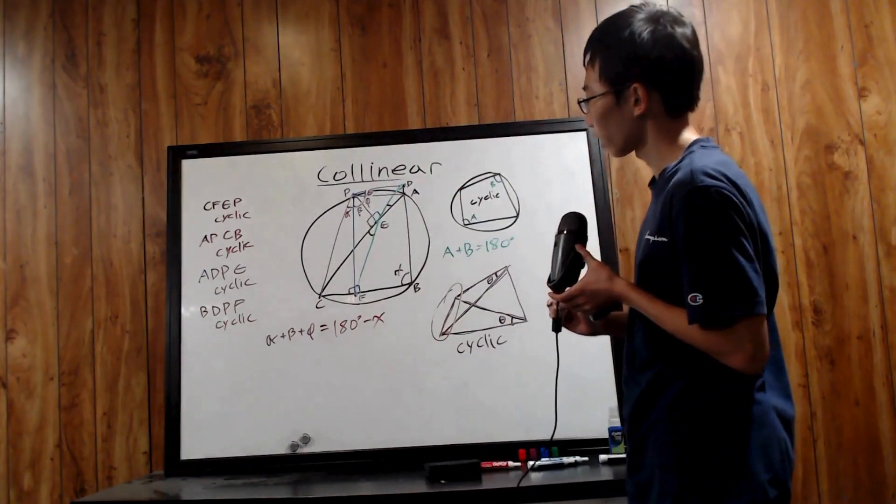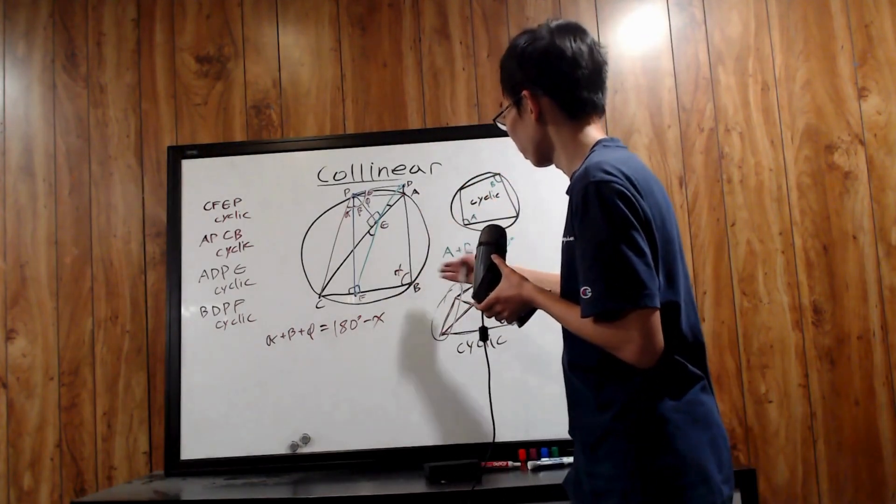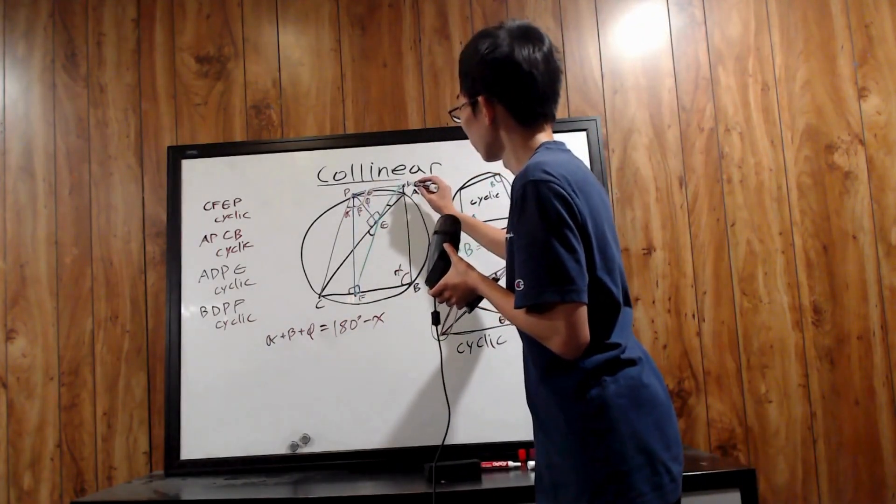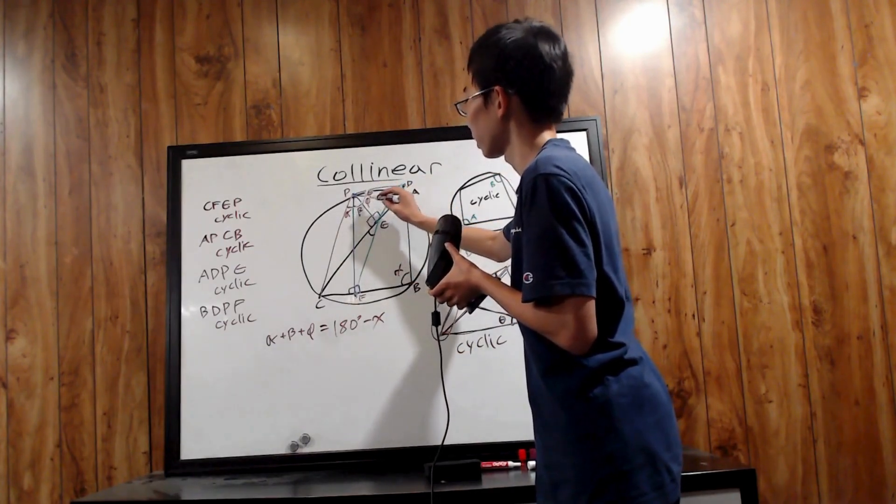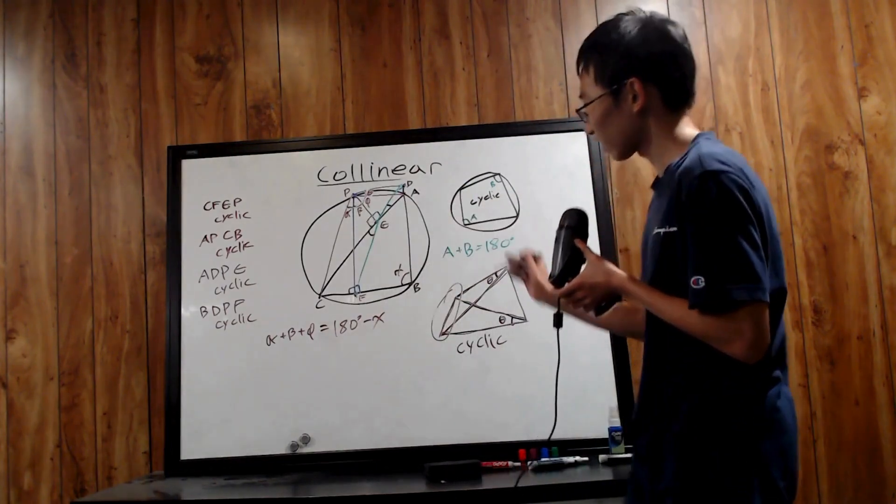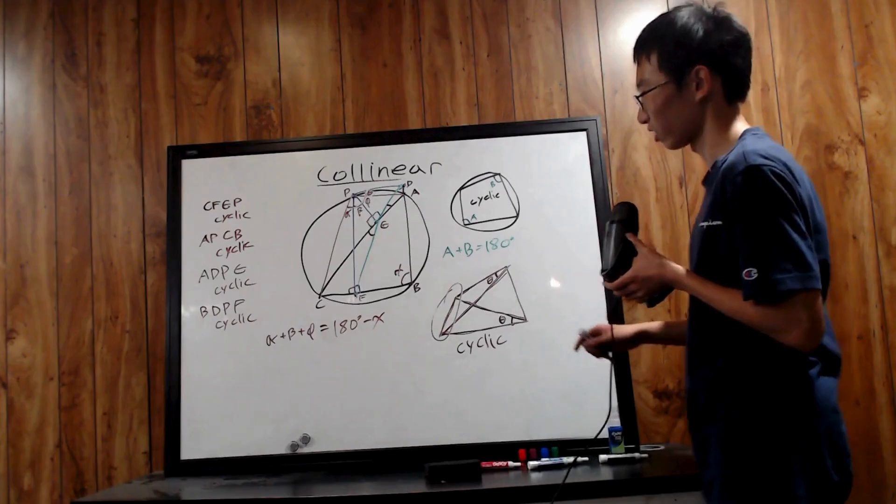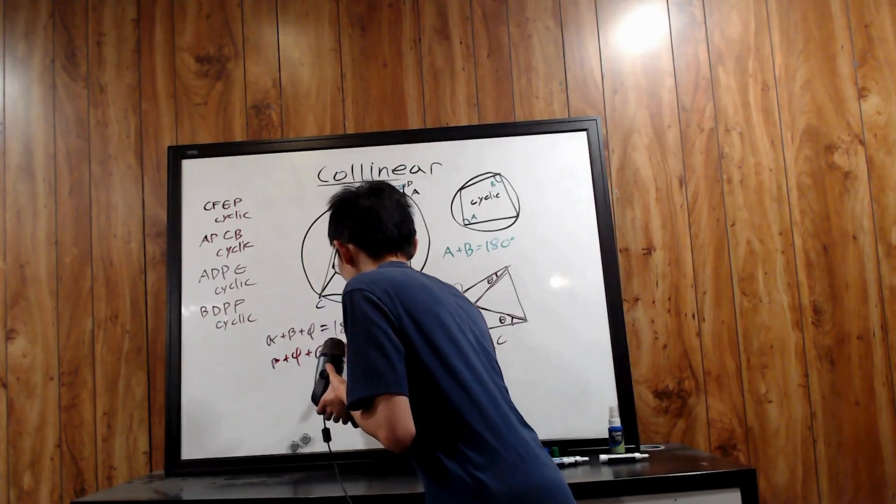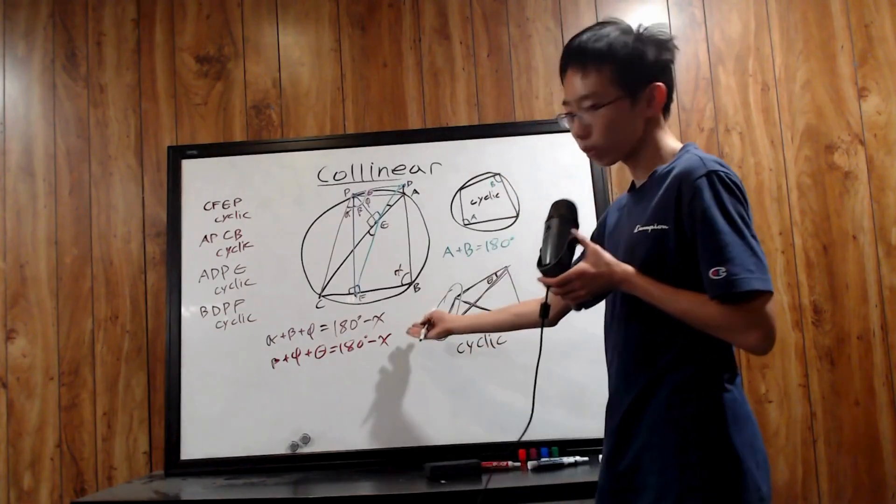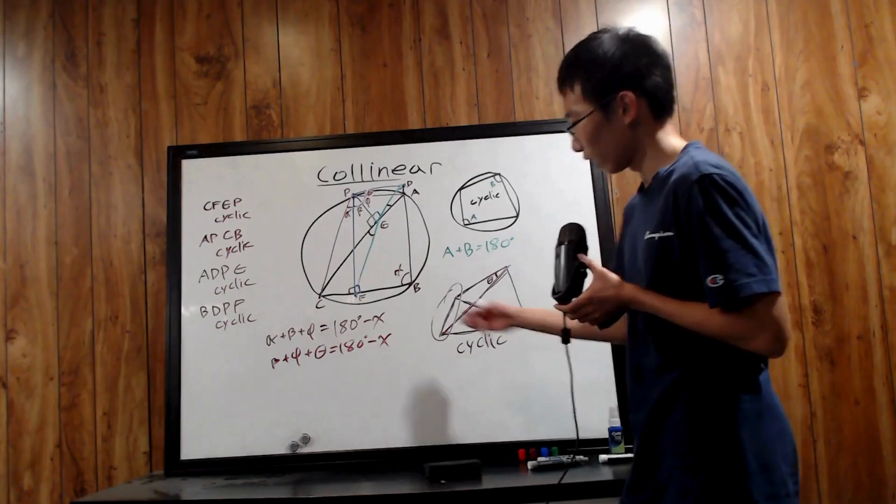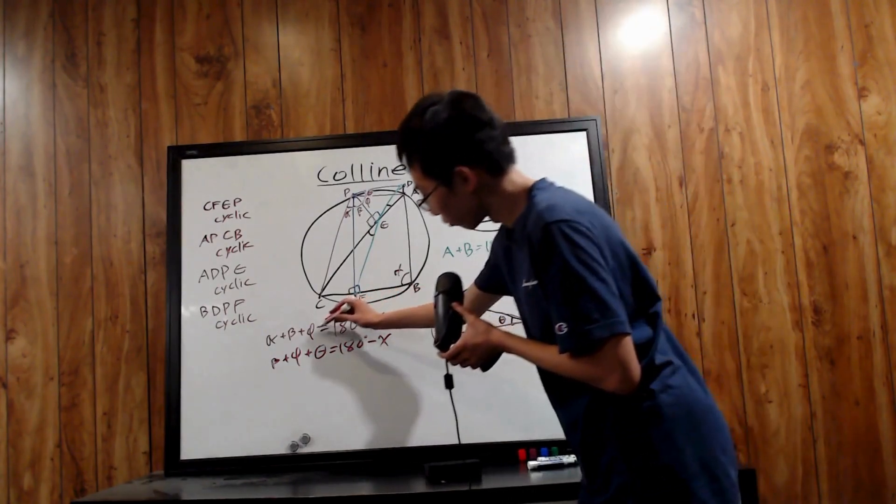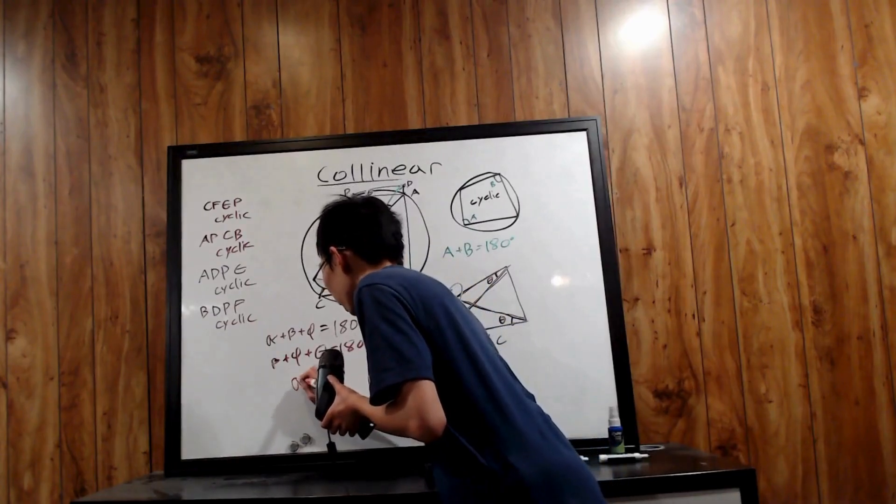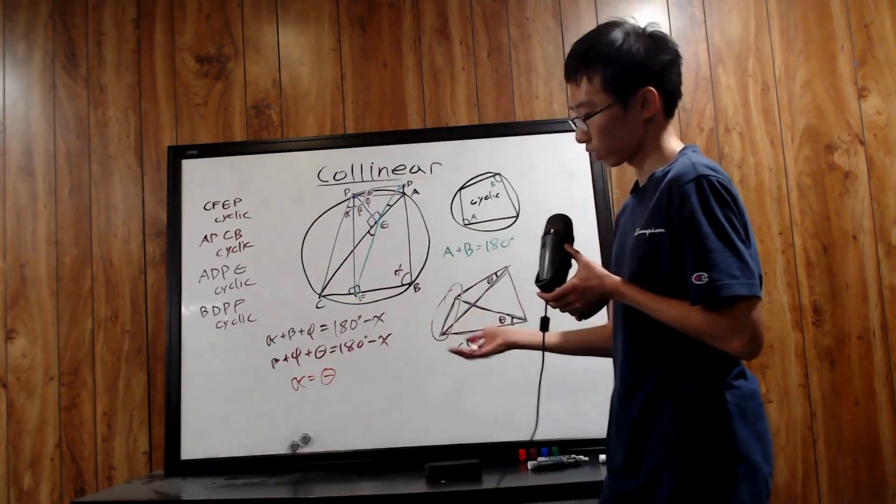Furthermore, in cyclic quadrilateral BDPF, we have this angle, which is equal to DPF, so that's beta plus phi plus theta. This over here, plus X, should also be 180 degrees. So therefore, we can actually write beta plus phi plus theta is equal to 180 degrees minus X. They're both equal to the same things, right? And therefore, take a look at this. If they're both equal to the same things, then phi is obviously equal to phi. And we also have beta is obviously equal to beta. Thus, we must have alpha equals to theta, right? That must be true then.